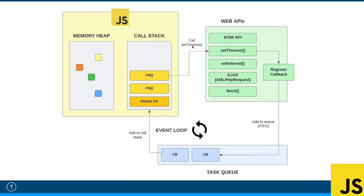In this diagram, I have setTimeout being called — let's say from a function, though it really doesn't matter. What happens is the web API registers the callback function we passed in, which said 'hello from callback'. And then that gets put into what's called the task queue, or sometimes called the callback queue. A queue is just a data structure — like a stack, but it works differently. Call stacks are last in first out, meaning the last thing put on top is the first thing to come out. With a queue, it's first in first out — the first thing put in is the first thing to go out.